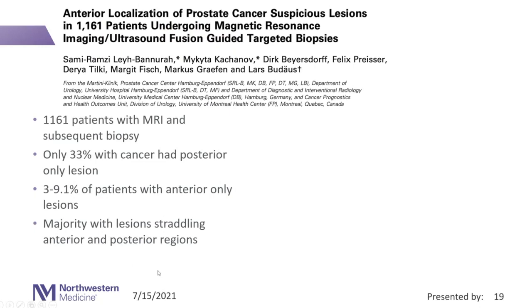A recent publication confirms this, evaluating just under 1,200 patients. They showed that only about one-third of prostate cancers had posterior-only lesions. Depending on the MRI series, 3% to 9% of patients had anterior-only lesions, and a majority had lesions straddling the anterior and posterior regions — the distinction based on the relationship to the urethra.